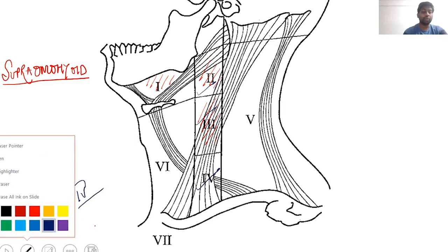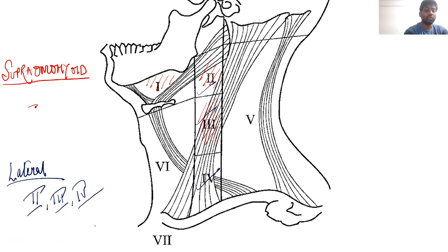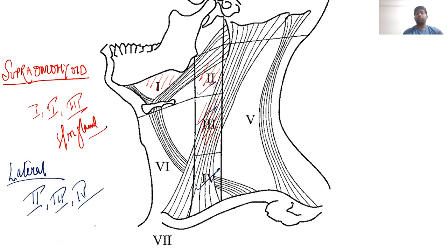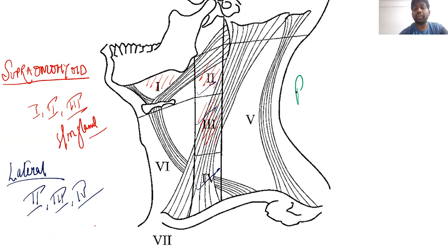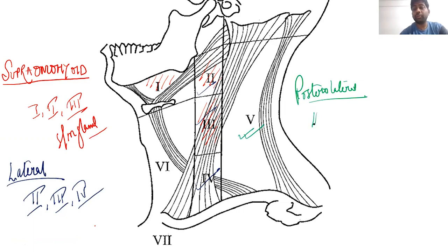To recap: supraomohyoid neck dissection covers stations 1, 2, and 3 with the submandibular gland; lateral neck dissection covers stations 2, 3, and 4. The next subtype is posterolateral neck dissection. In posterolateral neck dissection, we remove lymph node stations 2, 3, 4, and also station 5 (the posterior triangle). So posterolateral adds station 5 to the lateral dissection.